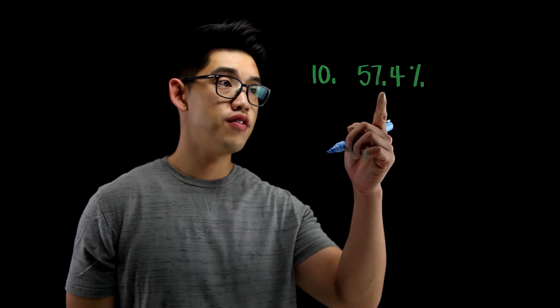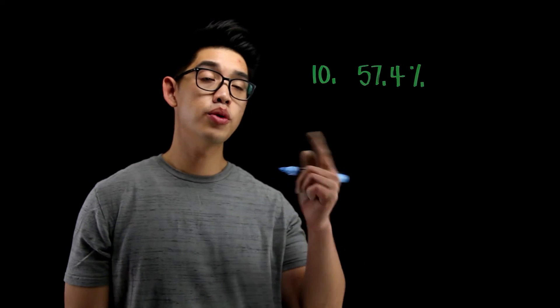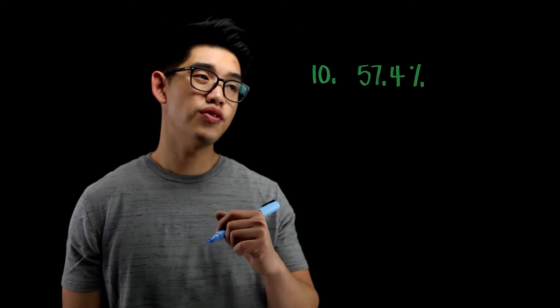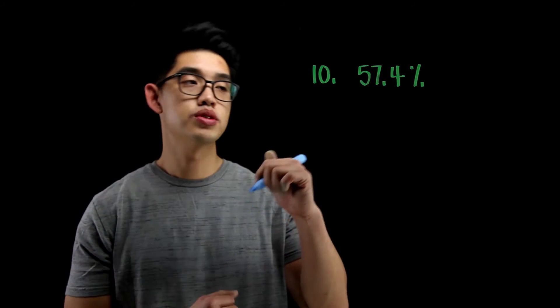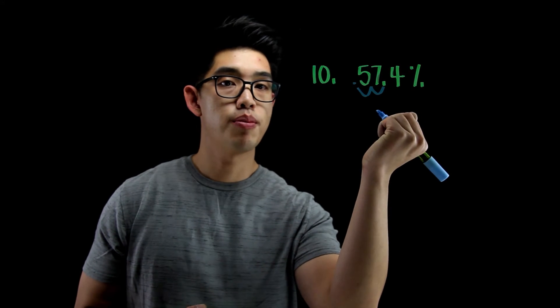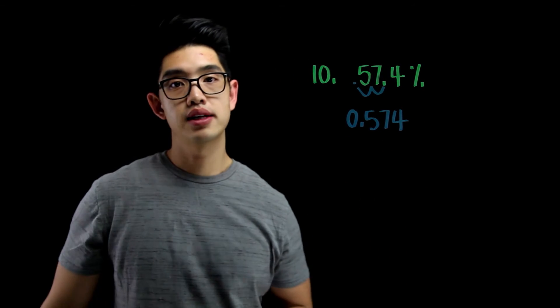For number 10, I have 57.4%. And again, I want to make it into a decimal. So, if I just use a shortcut, I can move the decimal points to the left two times. So, let me see. That's going to go boink, boink. Put the decimal point there. My answer is going to be 0.574. And that's it. Easy.